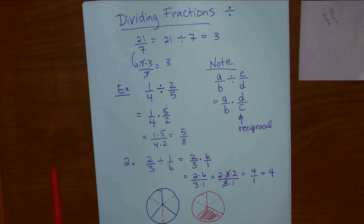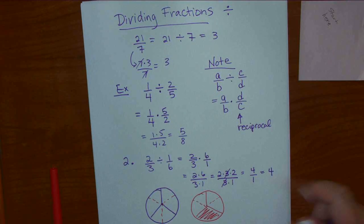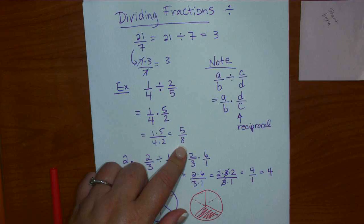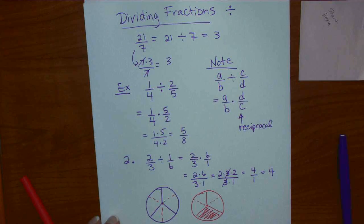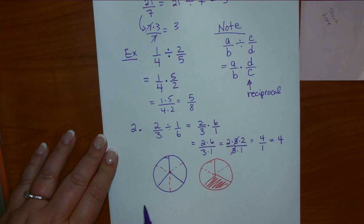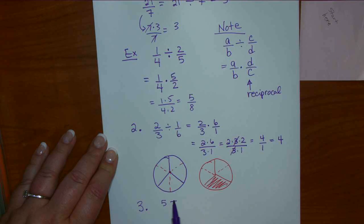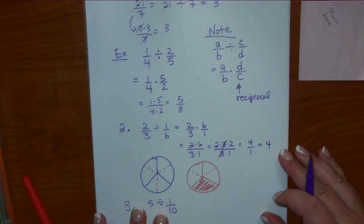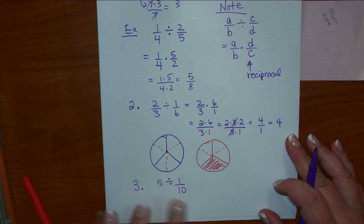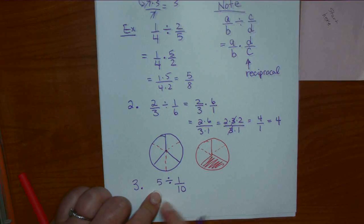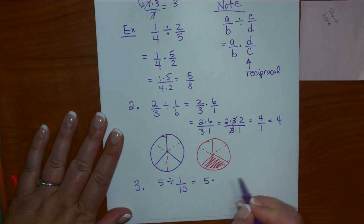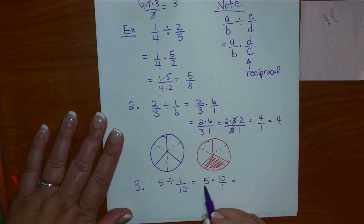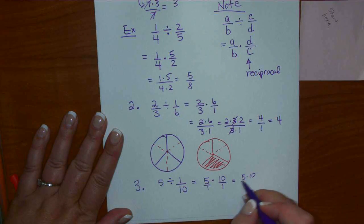Some divisions are harder to think about as pizza, especially when the answer doesn't work out nice. We don't always have a fraction divided by a fraction — we can have a number or scalar divided by a fraction. So 5 divided by 1 tenth: this is 5 over 1 times 10 over 1, which is 50. Five pizzas cut into tenths — you've got 50 pieces.